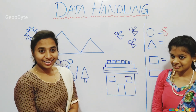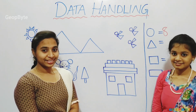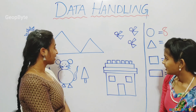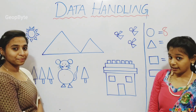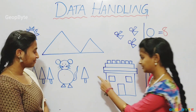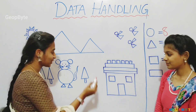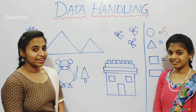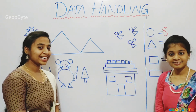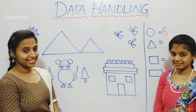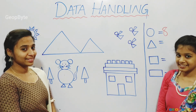Children, did we miss any triangle? Yes, we left one triangle. This is the triangle. So, twenty-three. We got twenty-three triangles. So let us write twenty-three.